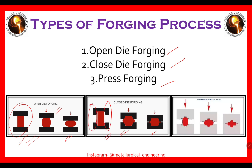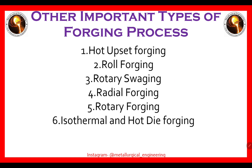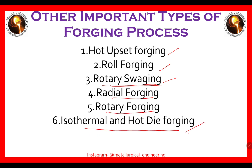In press forging, this is the schematic for the process. Other important types of forging processes include hot upset forging, roll forging, rotary swaging, radial forging, rotary forging, and isothermal and hot die forging.